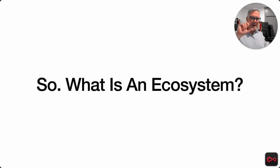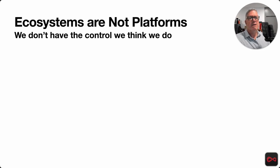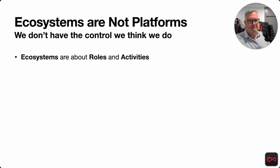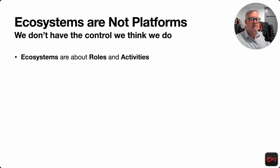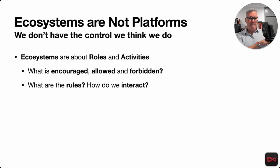So what is an ecosystem? To revisit this — they're not platforms. The big difference between platforms and ecosystems is we do not have the control in an ecosystem that we think we do. Control is extremely limited; it's a terrible currency to spend in an ecosystem model. They're really about roles — the people, organizations and code that does things — and the activities. It's really about managing those two things, making sure people understand what's encouraged, what's allowed — slight difference between those two — and what's forbidden. What are those roles and how do we interact as individual parties as we're fulfilling roles and doing activities in an ecosystem?